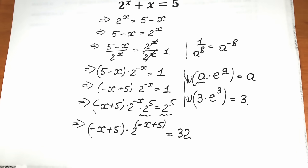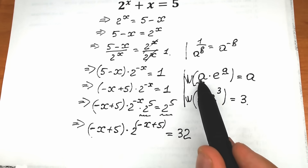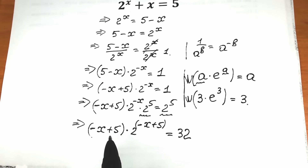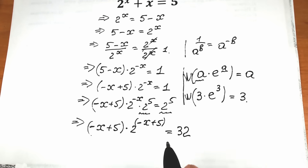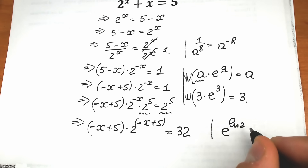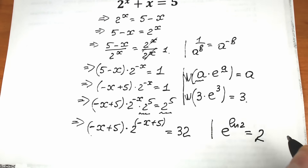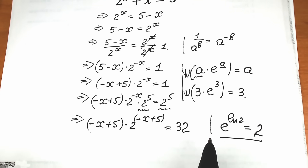Now let's look closely: we have minus x plus 5 appearing both as the coefficient and as the exponent. We have the same expression in both places — this matches the Lambert W structure. But we have base 2, not base e. So let's create our e by writing e to the power natural log 2 equal to 2. Now instead of this 2, let's plug in e to the power natural log 2.